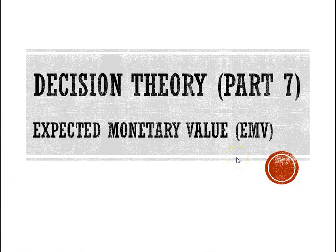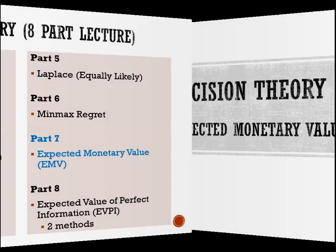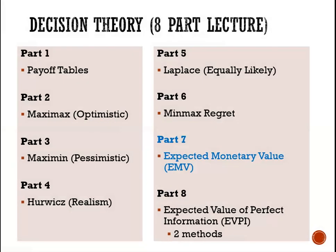Greetings and salutations. We are here again for part 7 of our decision theory lecture series. In this unit, we are looking at expected monetary value, EMV. We have looked at payoff tables, Maximax, Maximin, Hurwicz, Laplace, MinMax Regret, and now we are at expected monetary value.